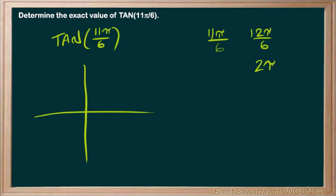Pi over 6 less than that. So, it'll be 2 pi minus pi over 6. That kind of helps us get a feel for where we're at.